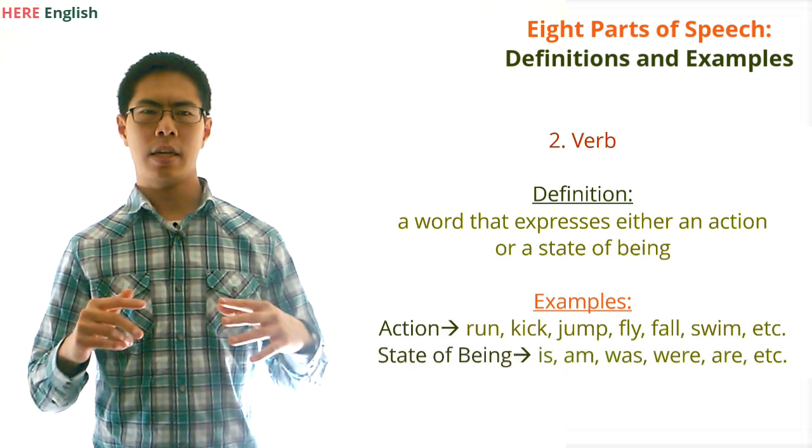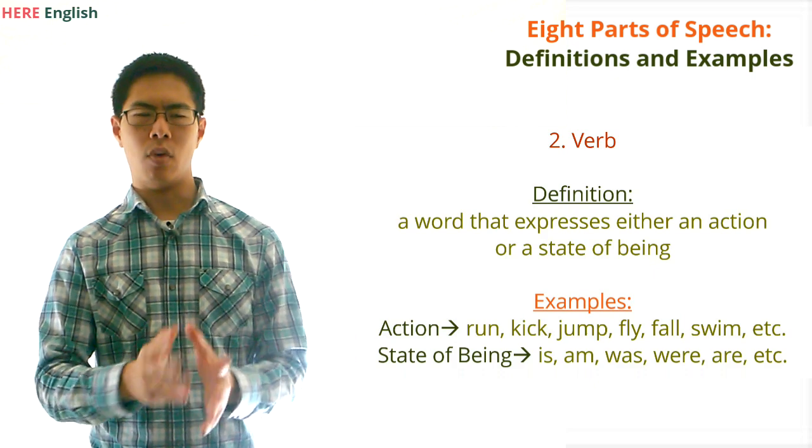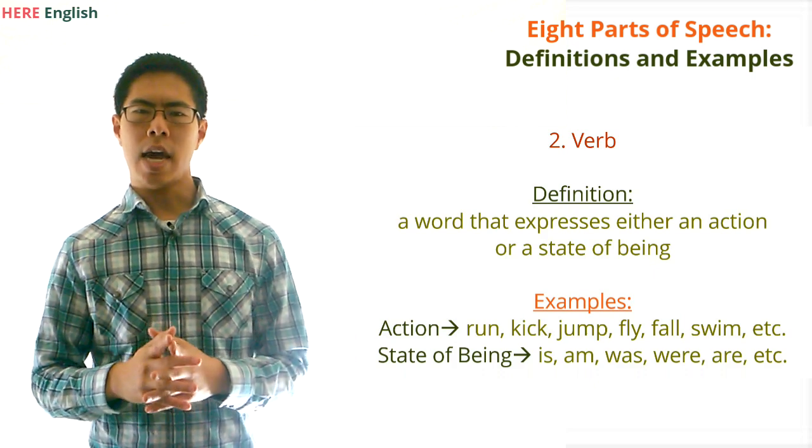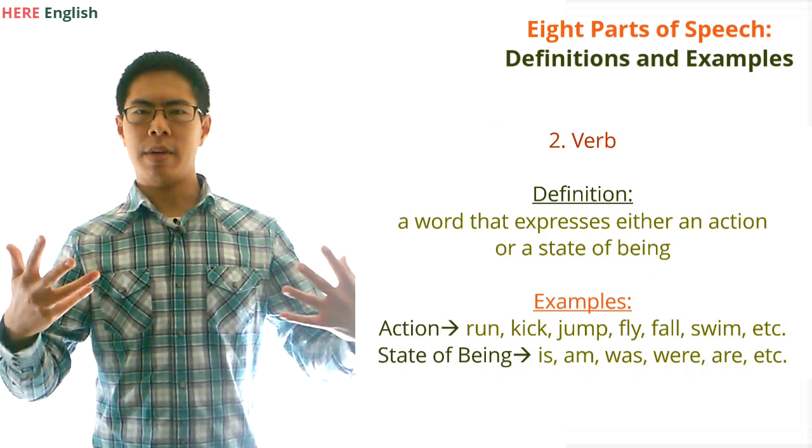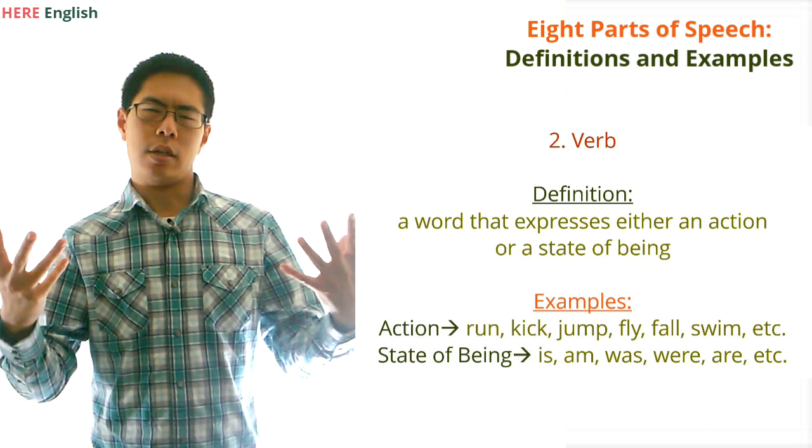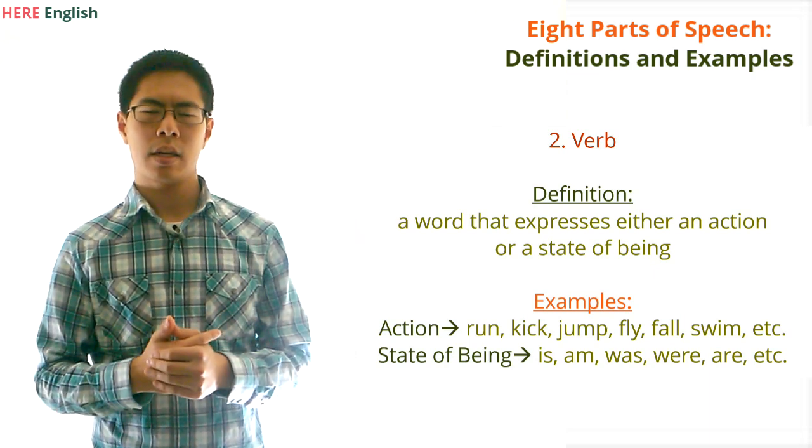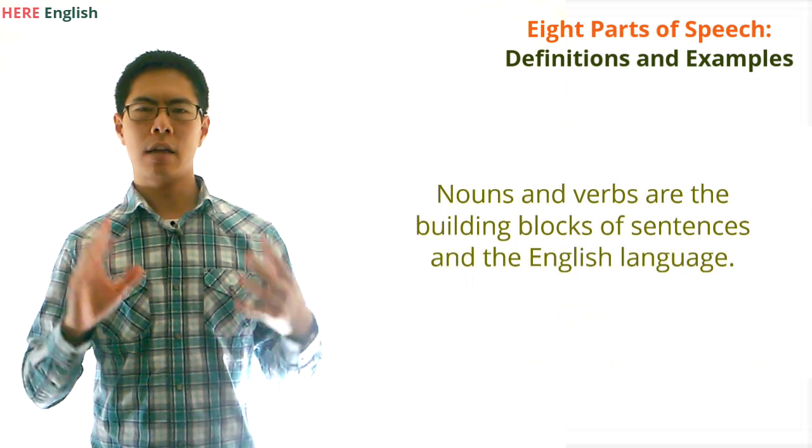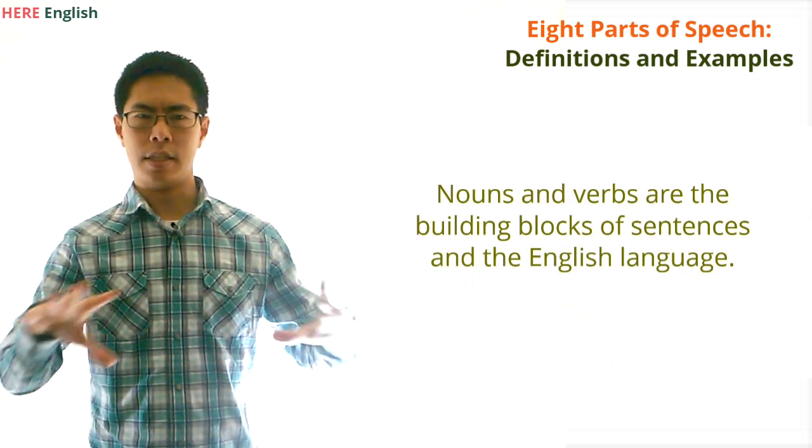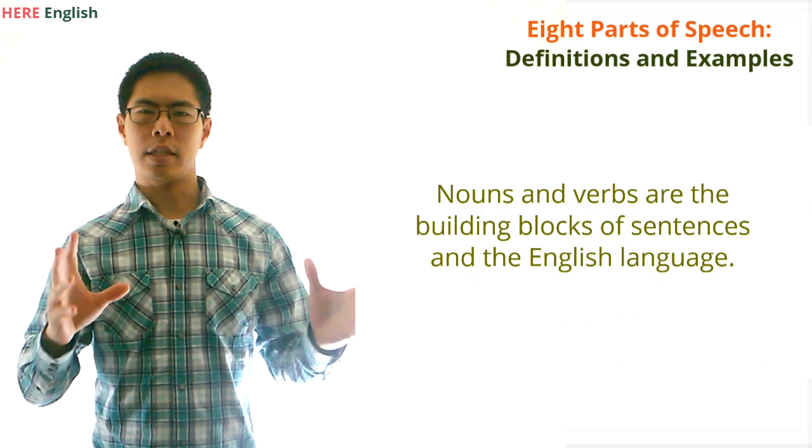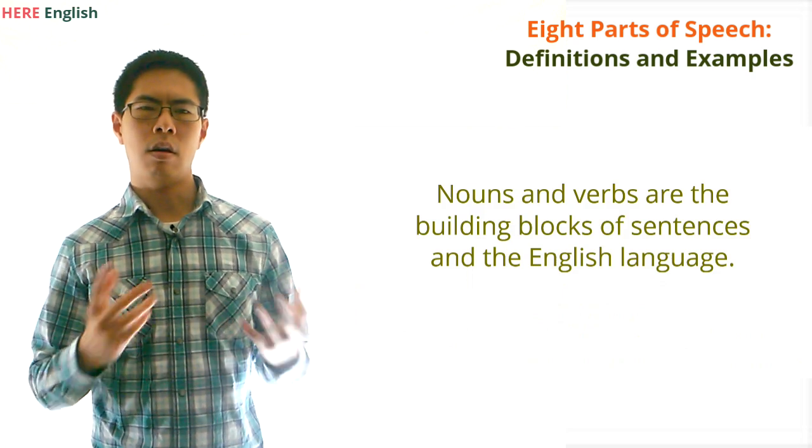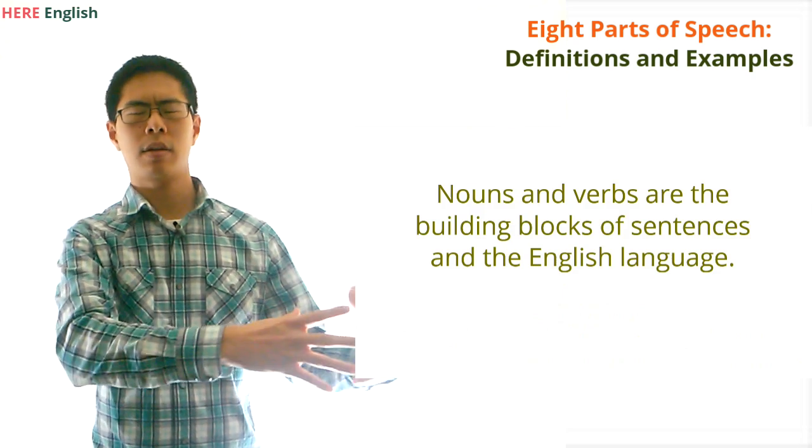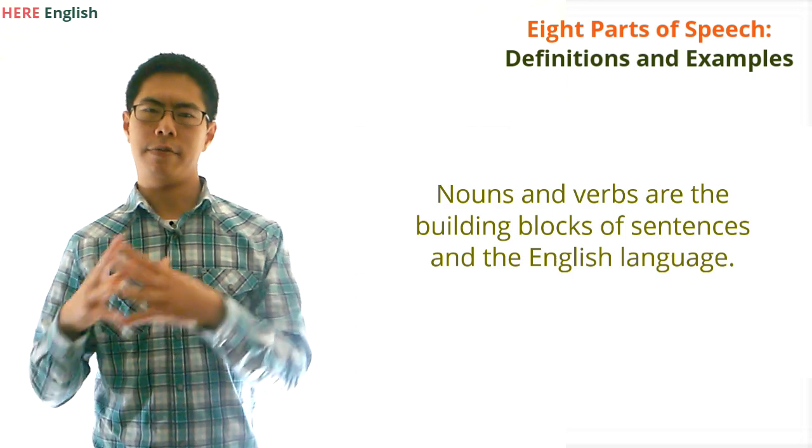And a verb that is a state of being includes words like is, am, was, were, and are. Action verbs are words that convey doing something, and a state of being verb is a word that conveys just being. The reason why our first two parts of speech are nouns and verbs is because nouns and verbs are the foundation of sentences, as well as the foundation of the English language itself. All complete sentences must include at least some kind of noun and some kind of verb.